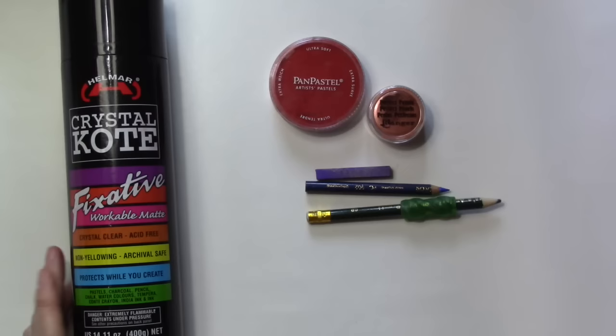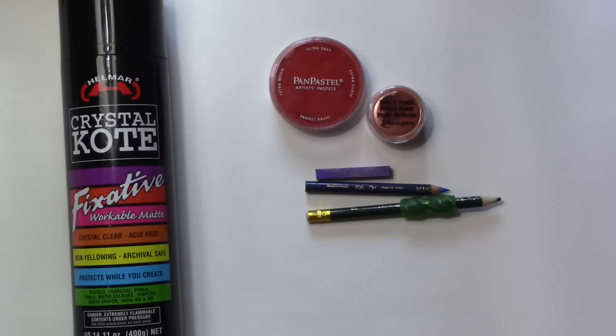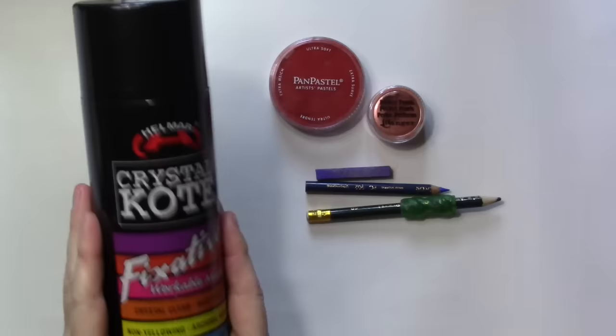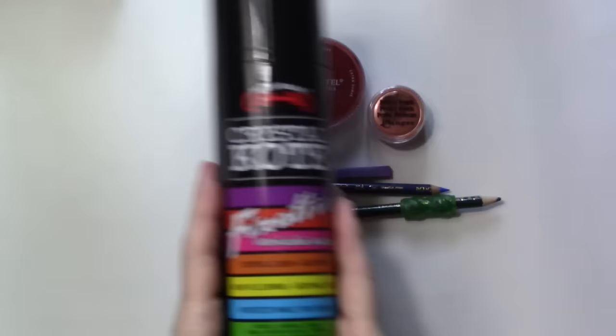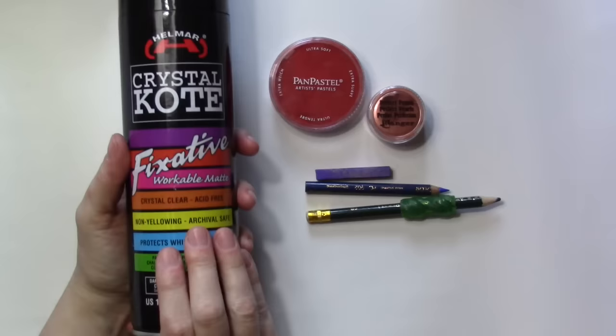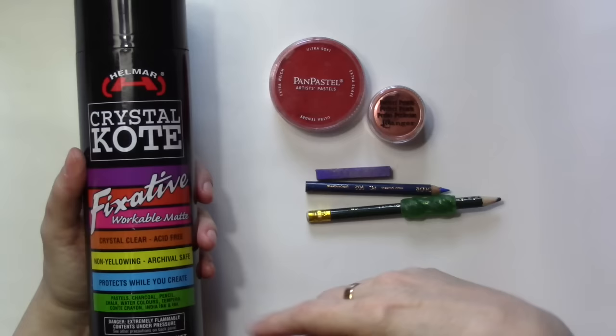These are the things that I use that tend to smudge when you're working with them and I am curious to see how the Helmar fixative fixes that. So that's what a fixative is for. If you're not familiar at all with fixatives, they are used to keep your mediums kind of in place while you're working.